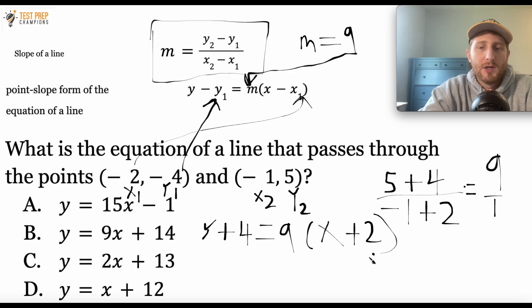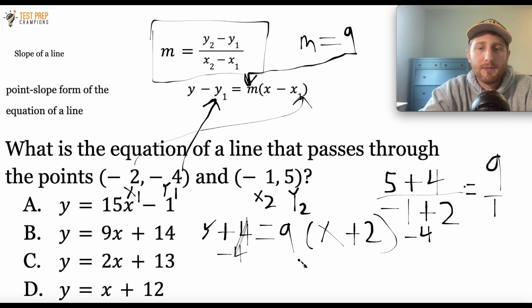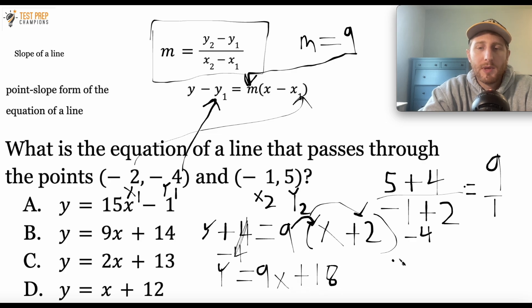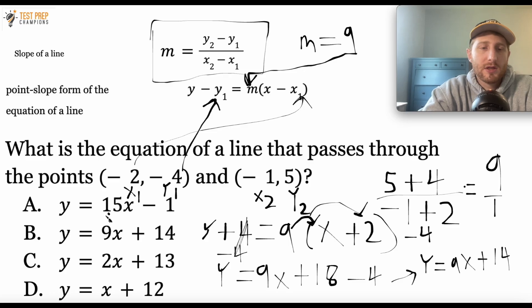So I have y plus four equals nine times (x plus two). I'll subtract four from both sides — the fours cancel — giving y equals nine times (x plus two) minus four. Now I distribute the nine: nine times x is 9x, and nine times two is 18. So I have y equals 9x plus 18 minus four. Since 18 minus four is 14, the final answer is y equals 9x plus 14. So B is the correct answer.